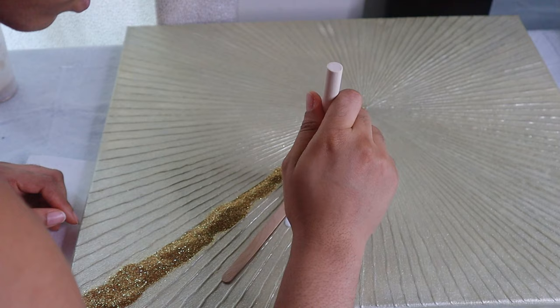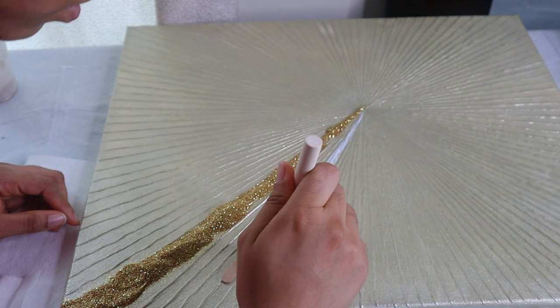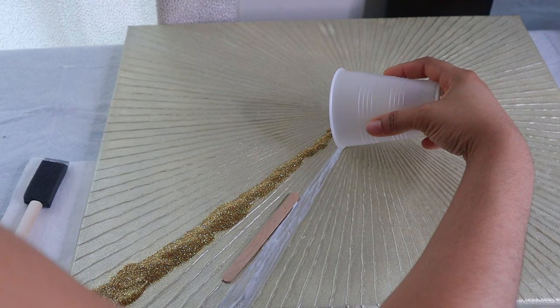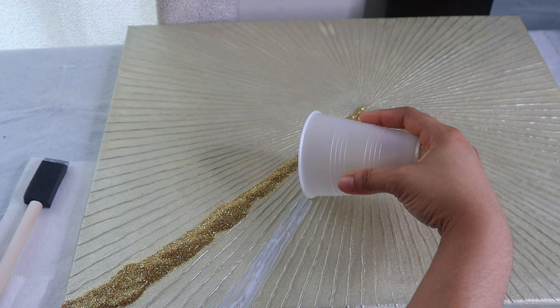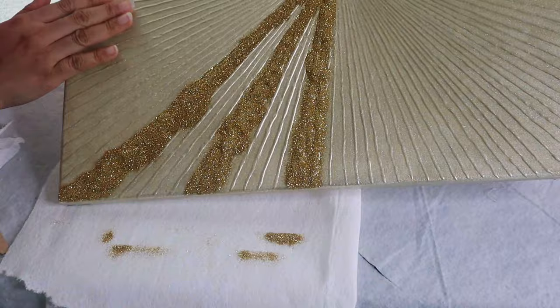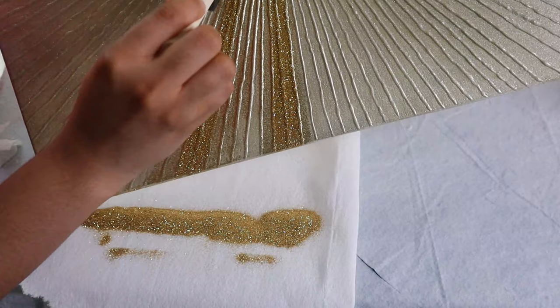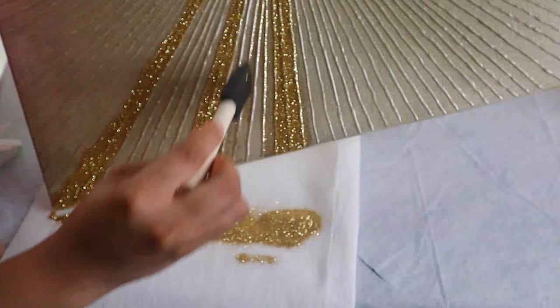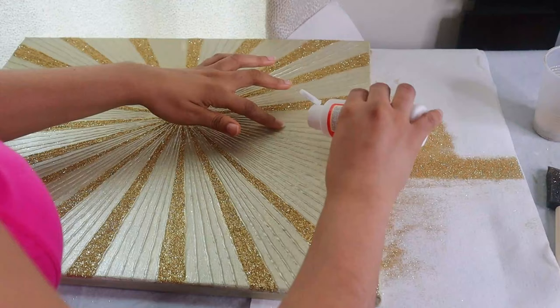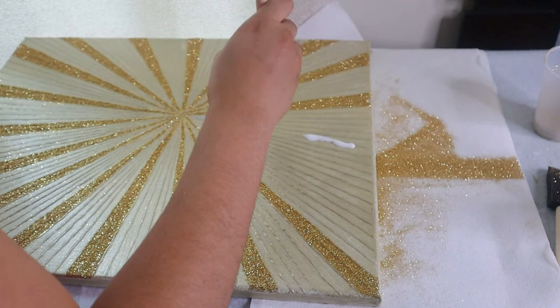So I just repeated the same step. Put the mod podge into the line, use my foam brush to apply the mod podge in the line, and I try to keep my hand steady so I don't get it everywhere. Then I went ahead to add the glitters immediately before the mod podge dries.